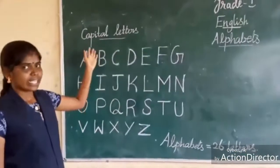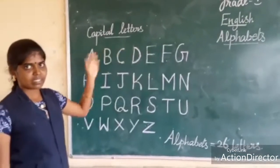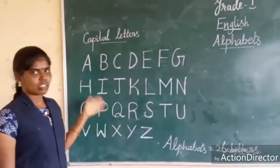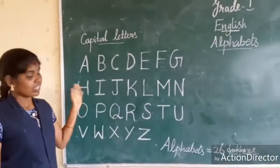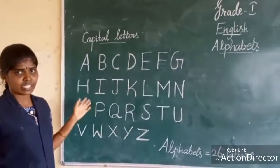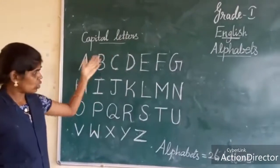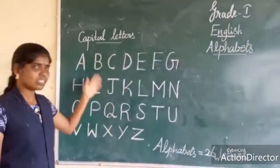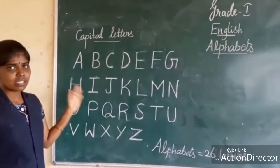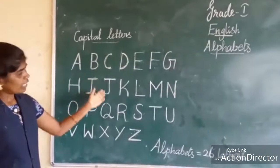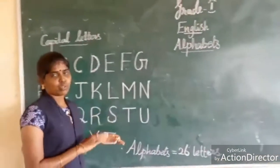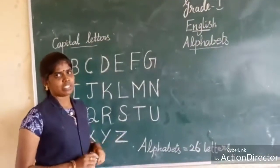This is capital letters. How many letters are here? There are 26 letters. What is this? This is alphabets. Now, we are going to write the alphabets.